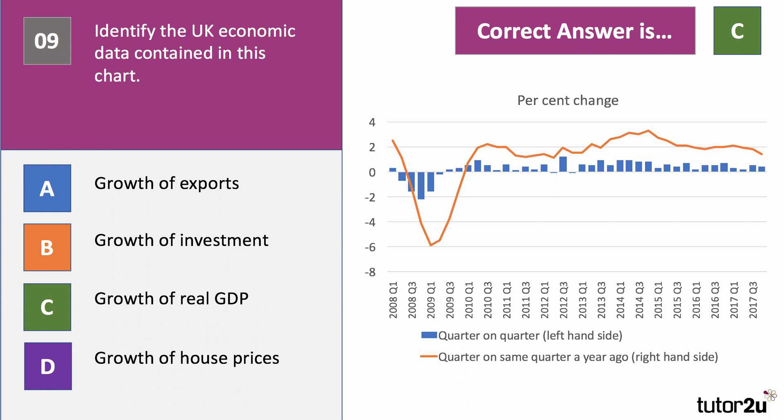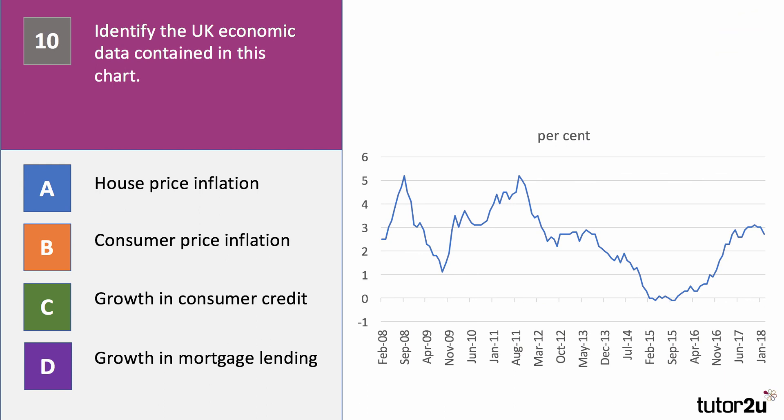Here's our last chart — chart number 10. Identify the UK data shown in this chart as a percentage change. Is it house price inflation, consumer price inflation, the growth in consumer credit, or the growth in mortgage lending?